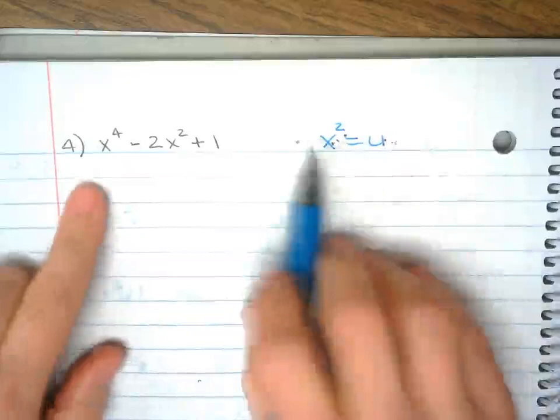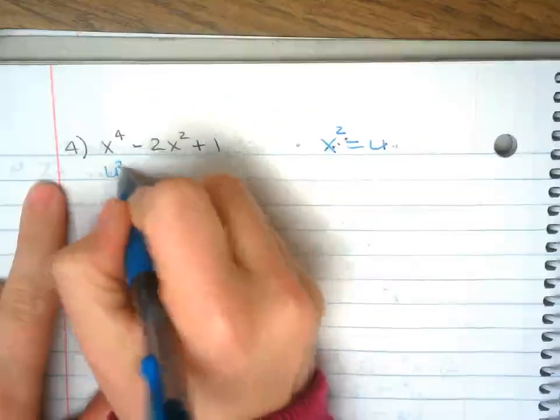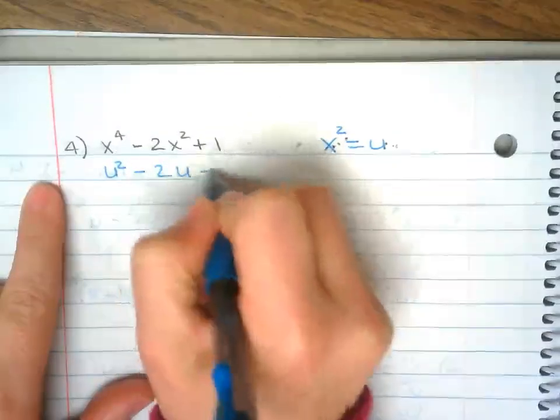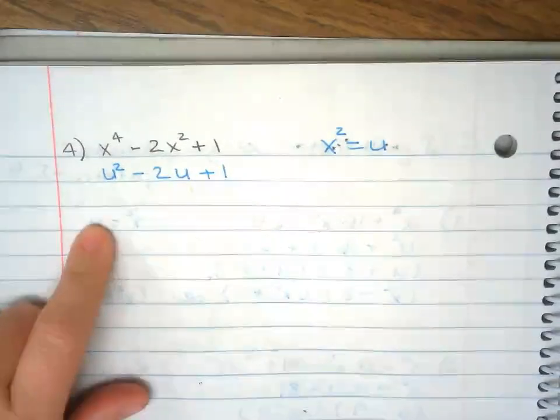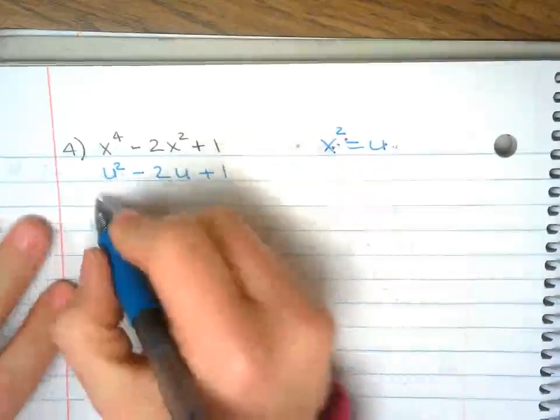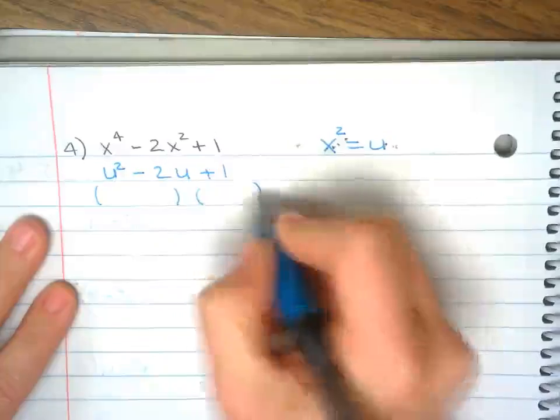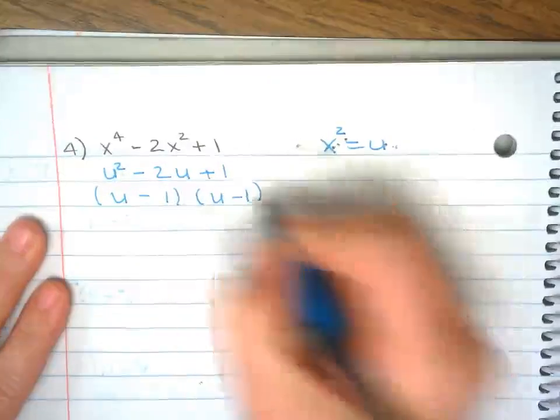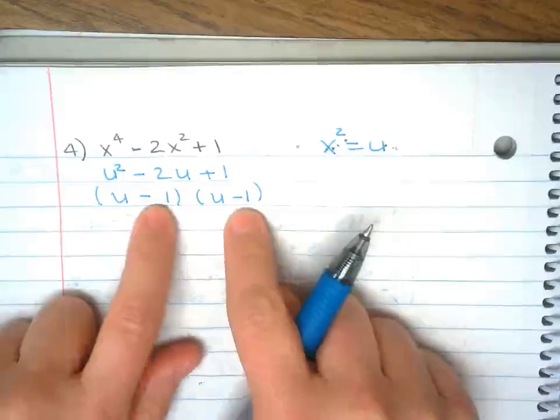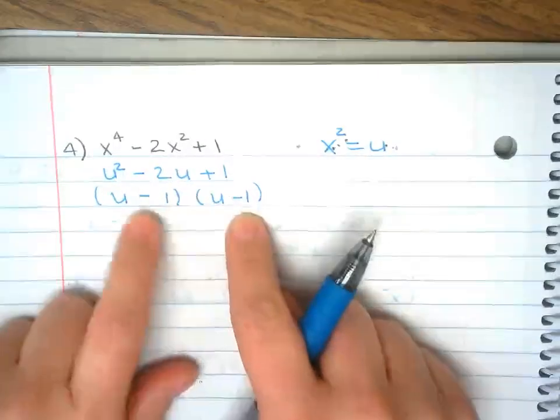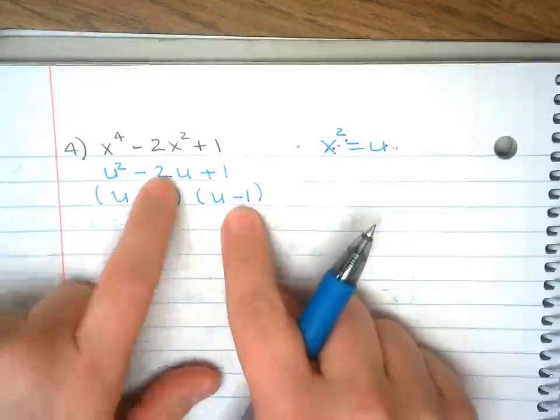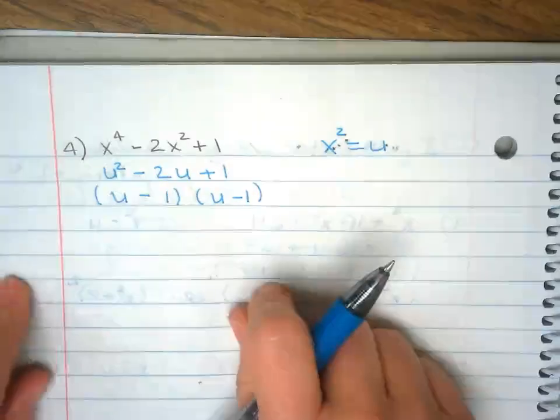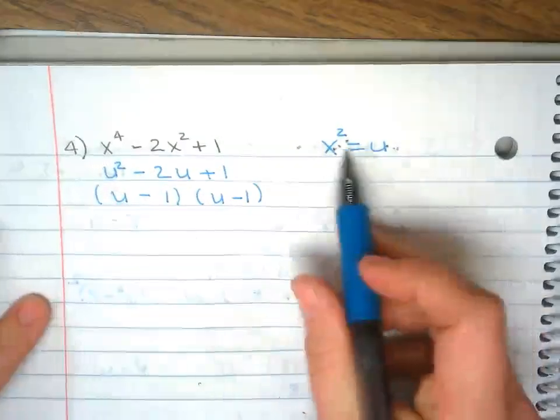So substitute this for u. u squared minus 2u plus 1. Factor it. Multiply two negatives, make a positive. Add negative 1 to negative 1, you get negative 2. Go back to x squared.